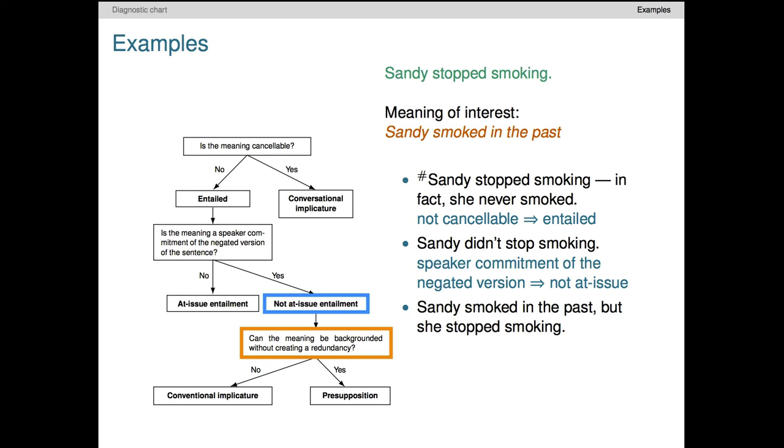The final question we need to ask is whether this target meaning can be backgrounded. Here's a basic example. The first sentence just expresses the target meaning, and the overall result sounds fine. A bit long-winded and cautious, perhaps, but not all that unusual. That leads us to the conclusion that the meaning in question is presupposed.